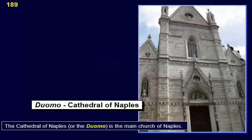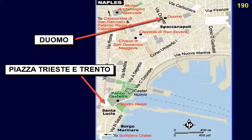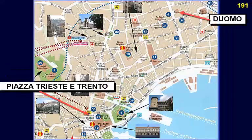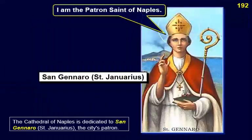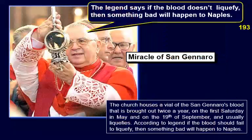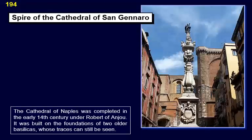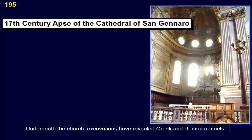The Cathedral of Naples, or the Duomo, is the main church of Naples, dedicated to San Gennaro — Saint Januarius — the city's patron. The church houses a vial of San Gennaro's blood that is brought out twice a year — on the first Saturday in May and on the 19th of September — and usually liquefies. According to legend, if the blood fails to liquefy, something bad will happen to Naples. The cathedral was completed in the early 14th century under Robert of Anjou, built on the foundations of two older basilicas; underneath, excavations have revealed Greek and Roman artifacts.